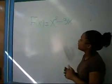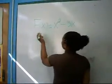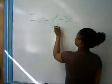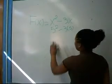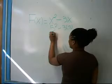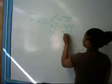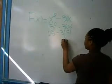The way you solve this function problem is you take the 5 and put it where the x is. Then you multiply 5 and 5 which gives you 25 minus 3 times 5. And then you multiply 3 and 5 which gives you 15.